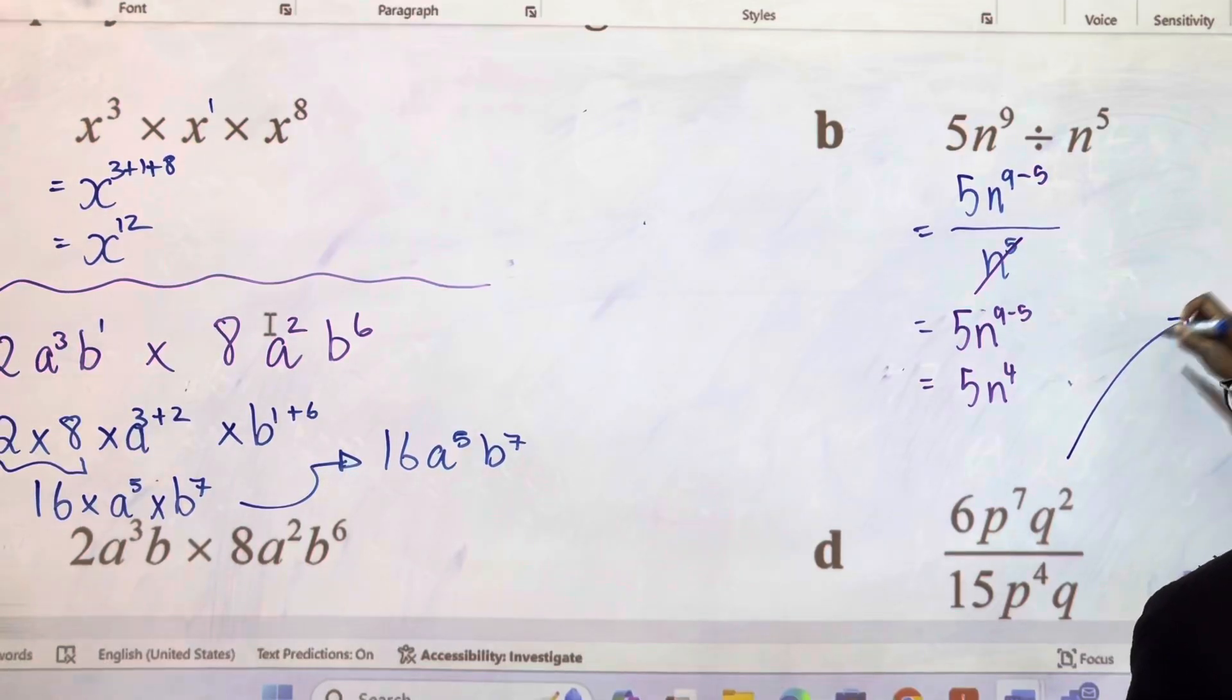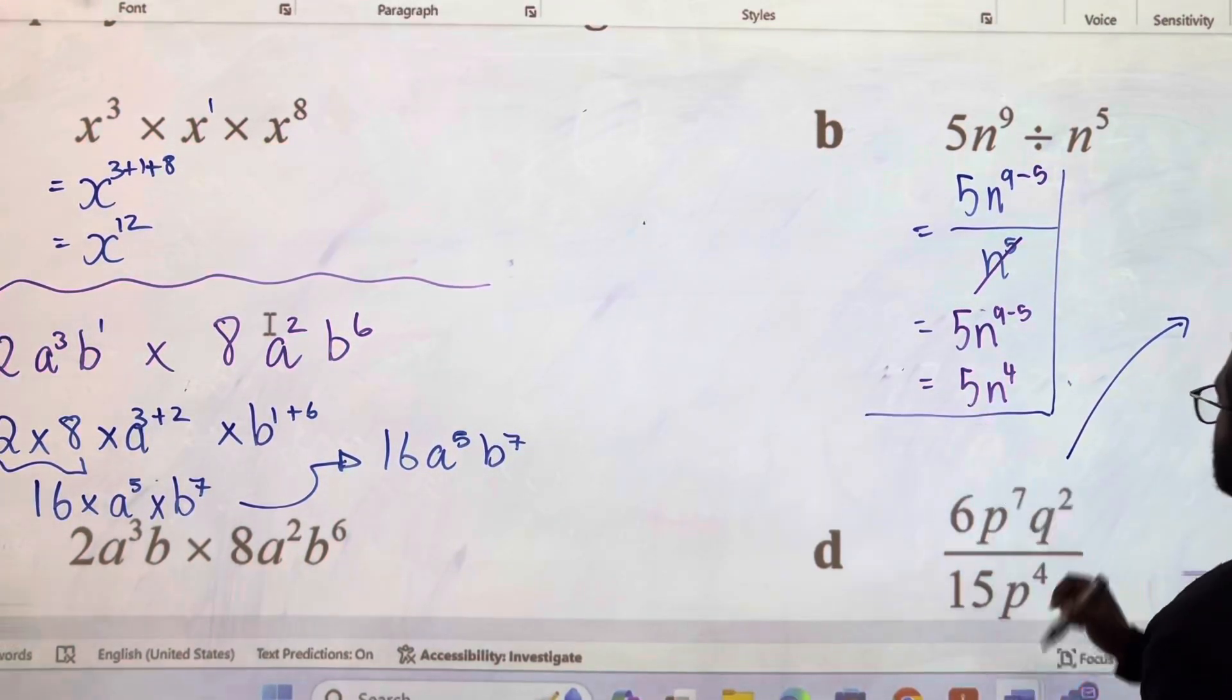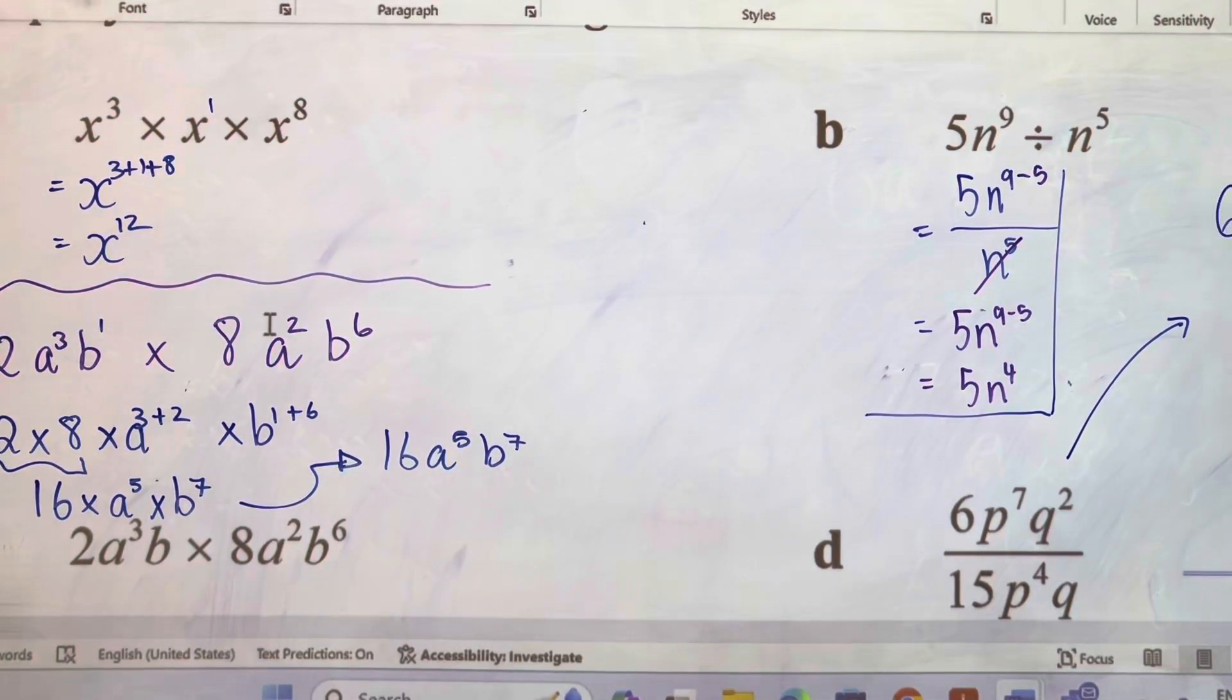Next question, I'm going to do it up here. So 6p to the power of 7, q to the power of 2, and then you've got 15p to the power of 4 and then q. Now like I said earlier, you're going to put in a power of 1, just so I know there's a 1 there. Now can we simplify? Yes. Top and bottom, 6 and this 15, they can both divide by 3.